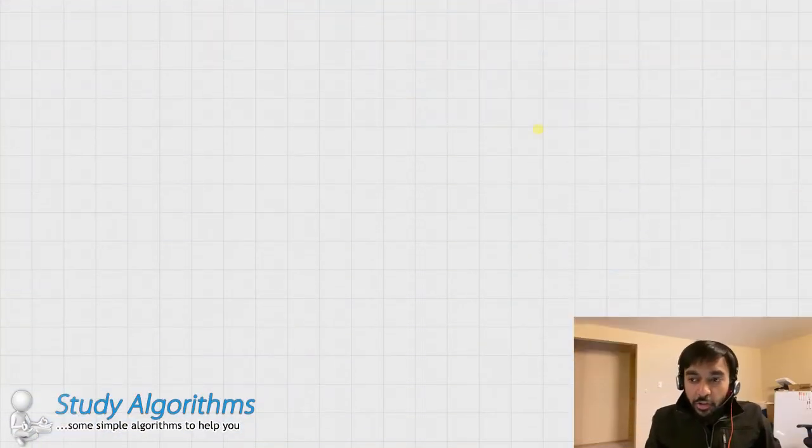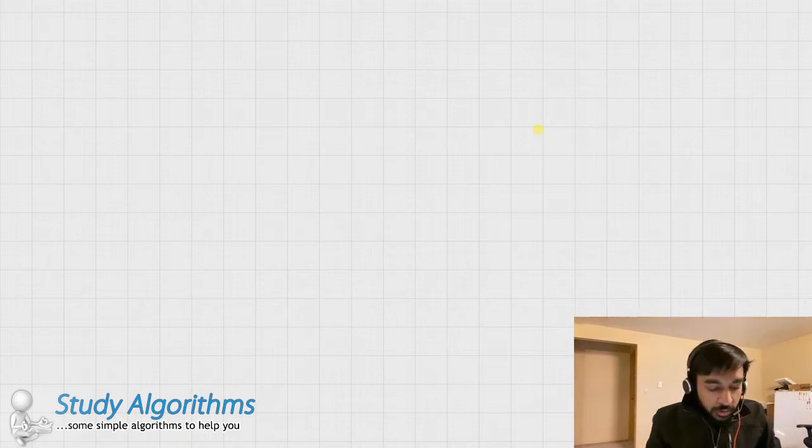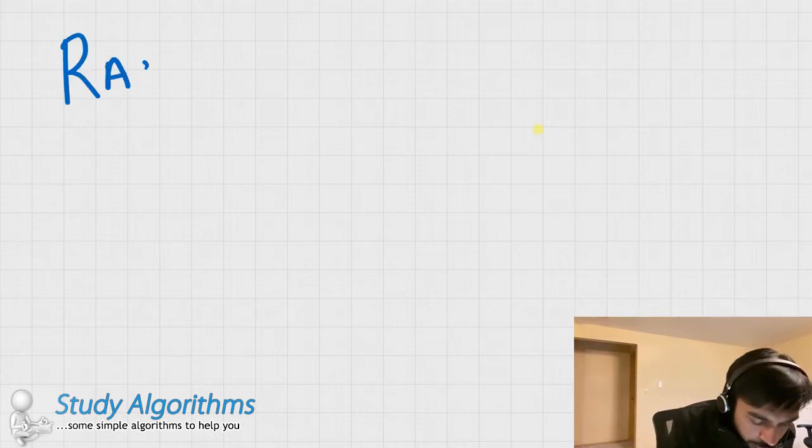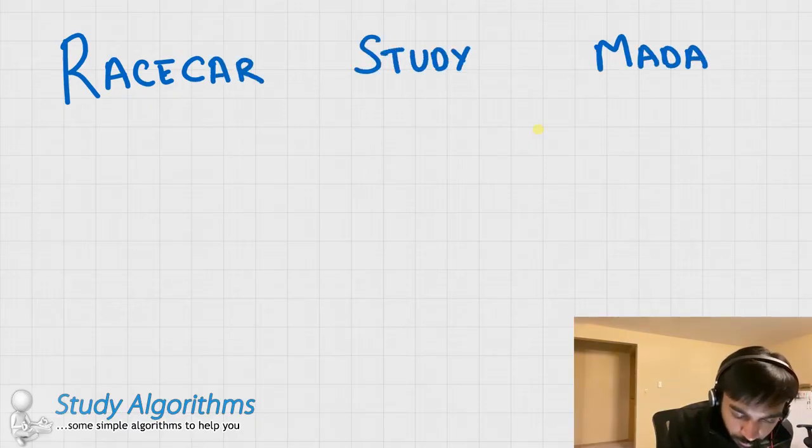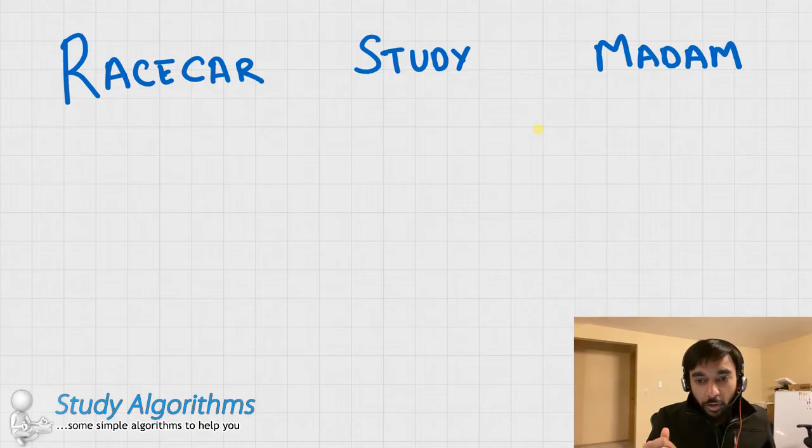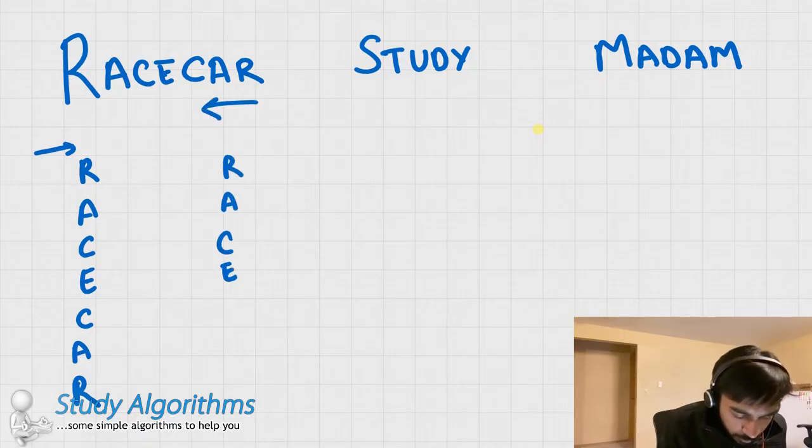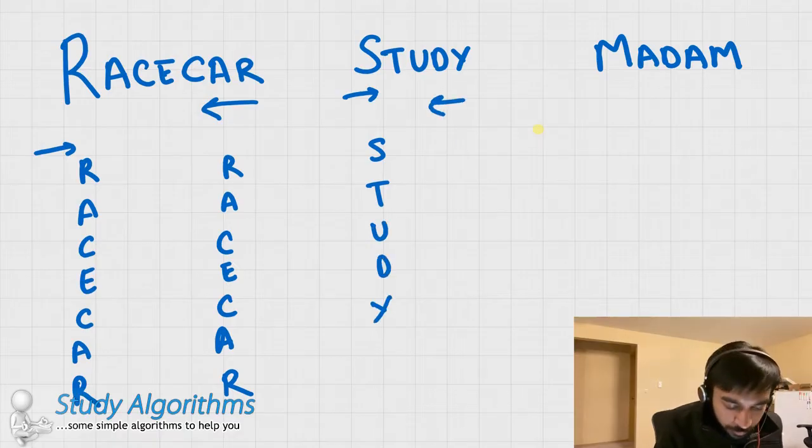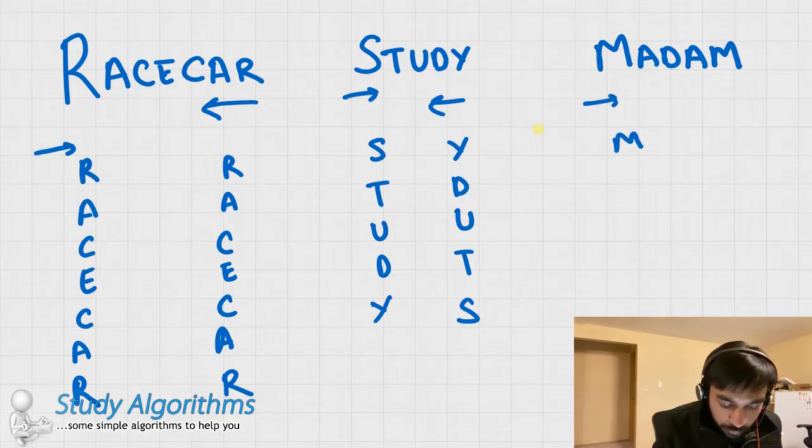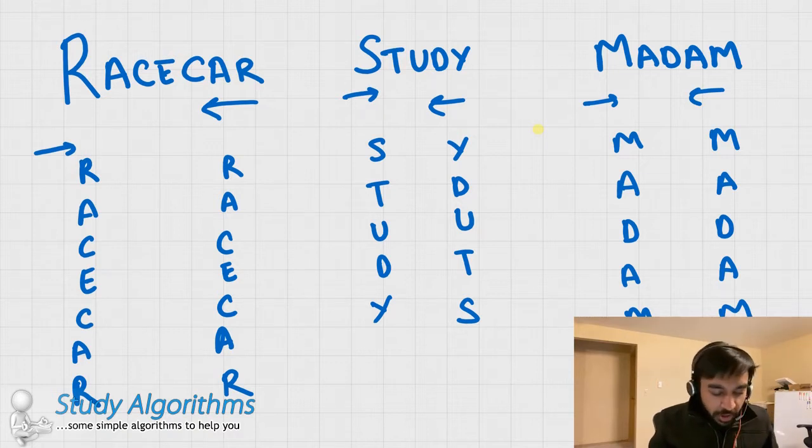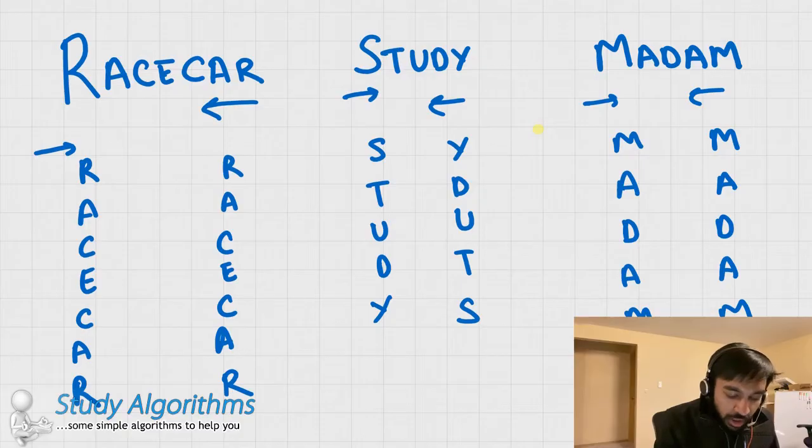As you know, a palindrome is a string which reads the same backwards or forwards. So, let us take up three strings. We are going to read each of these strings first forward and then backward. Now reading it backward. Going on to the next string. Now reading it backward. And for the last and the final string, taking it backwards. So what one may observe is that the first string, racecar, is the same if you read it forwards or if you read it backwards. So we would call this string a palindrome.